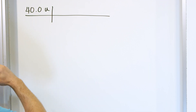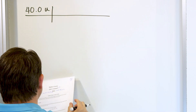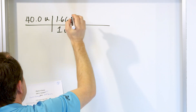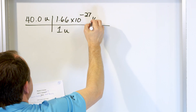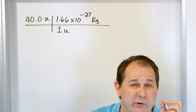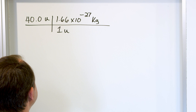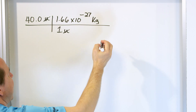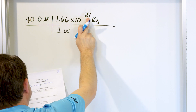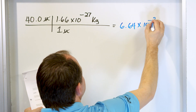If you open a physics book to the first page, you'll find conversion factors. One atomic mass unit equals 1.66 × 10⁻²⁷ kilograms. Converting: 40.0 AMU × (1.66 × 10⁻²⁷ kg/AMU) — the atomic mass units cancel — gives 6.64 × 10⁻²⁶ kilograms. This is the average mass of one atom on earth expressed in kilograms.